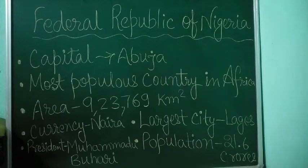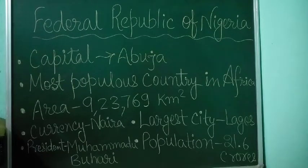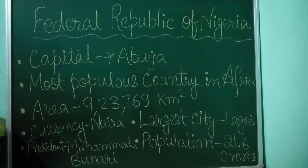The largest city in Nigeria is Lagos, one of the largest metropolitan areas in the world and the second largest in Africa. The currency of Nigeria is the Naira. The President of Nigeria is Muhammadu Buhari and the Vice President is Yemi Osinbajo. Nigeria gained independence from the UK in the year 1960.